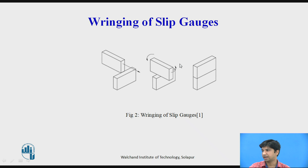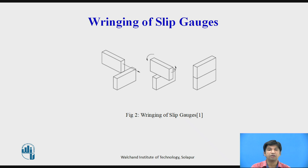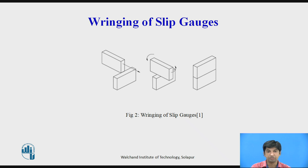The gauge is oscillated at 90 degrees to form the required dimensions, expelling air from between the gauge faces and causing the blocks to adhere. The adhesion is caused partly by molecular attraction and partly by atmospheric pressure. When two gauges are rung, the combined dimension is exactly the sum of their individual dimensions, and the rung gauge can be handled as a unit without clamping.